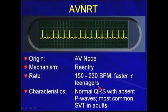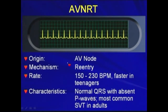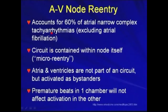It can be faster in teenagers. It presents with a narrow QRS complex, or narrow QRS with absence of P waves. This is the most common SVT in adults, accounting for 60% of the Atrial Nodal Reentrant Tachycardias, excluding atrial fibrillation.